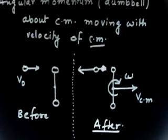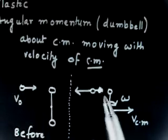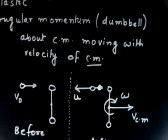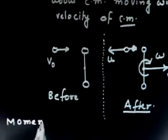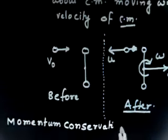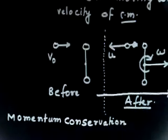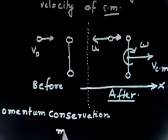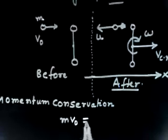I can apply momentum conservation because there is no external force acting on the system. The only forces are the collision forces, which are internal. Let us say the ball goes in the opposite direction with speed u. Applying momentum conservation in the x-direction: initial momentum is M*V0. Finally, the whole system moves with Vcm and the ball moves with -u. So: V0 = Vcm - u. This is equation 1.